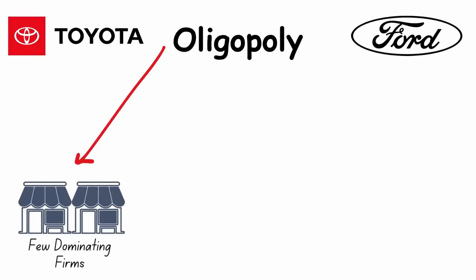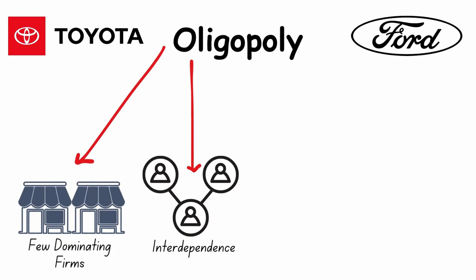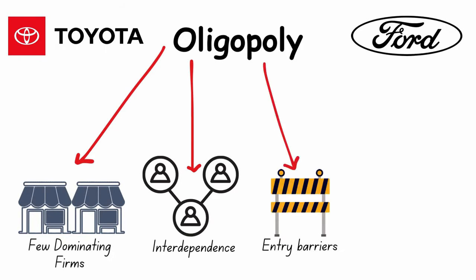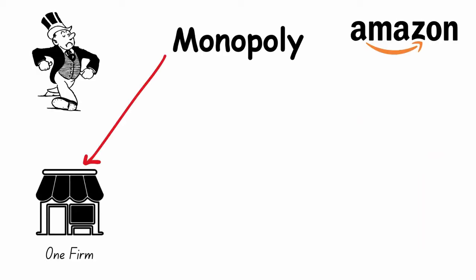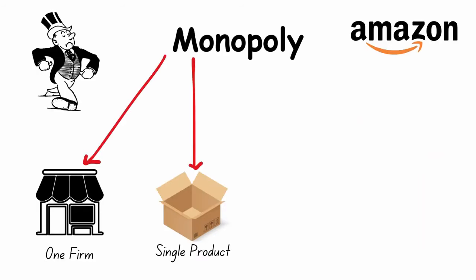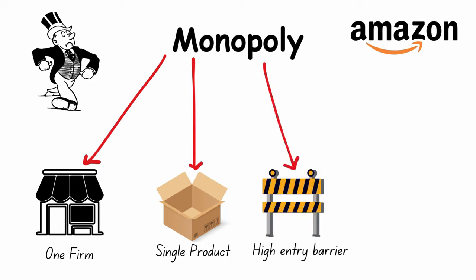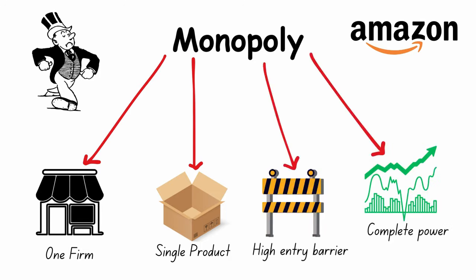In an oligopoly, there are few dominating firms, interdependence, entry barriers, and high market power. In a monopoly, there's one firm, a single product, a high entry barrier, and complete power.